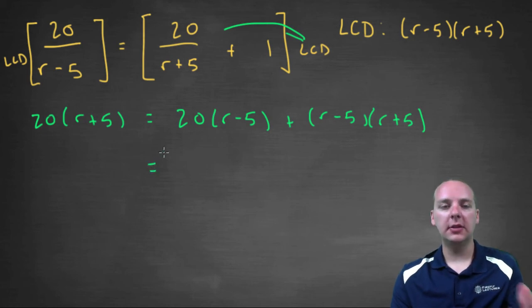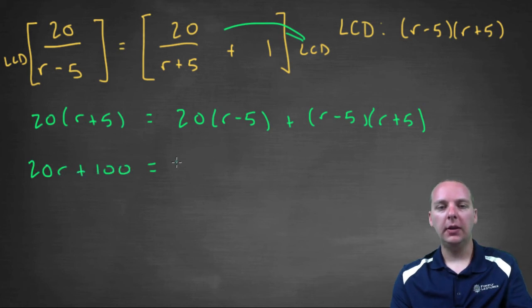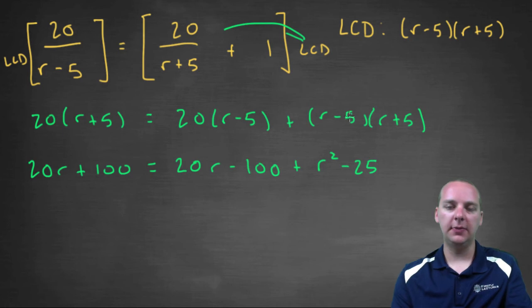Now we have an equation with no fractions, that makes it a lot easier. We have 20 r plus 100, equals 20 r minus 100, plus r squared minus 25. That's a different, these are conjugates here, r minus 5 times r plus 5. So, r squared plus 5 r minus 5 r minus 25.